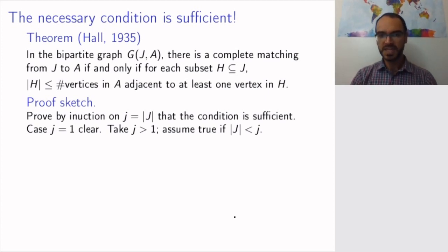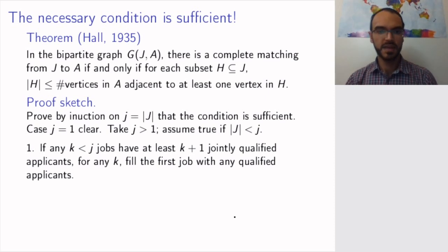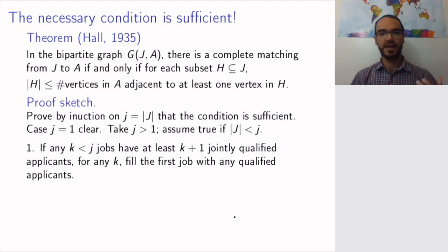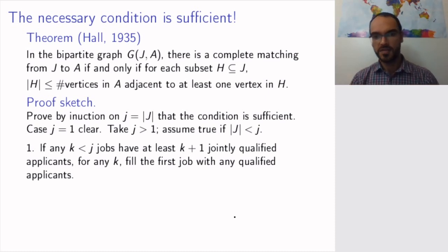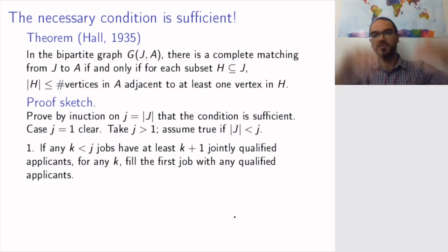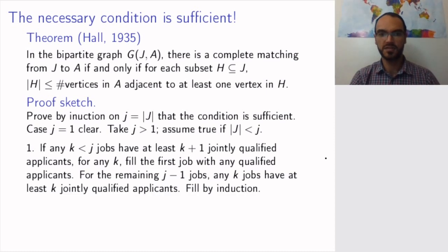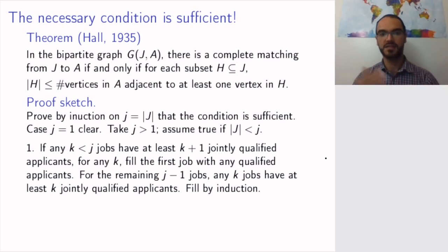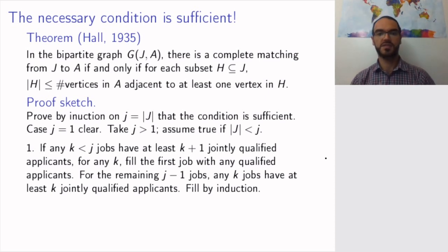Two cases can happen. In the first case, if any k strictly less than j jobs has at least k plus one jointly qualified applicants, then you can fill job number one with any qualified applicant. Since you had one applicant to spare for each set of jobs, for the remaining j minus one jobs you're left with at least k qualified applicants for any k jobs. Since j minus one is smaller than j, you can use the induction hypothesis and fill the remaining jobs by induction.